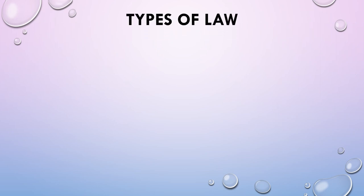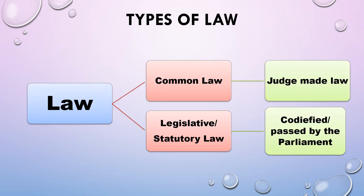Broadly, there are two types of law. The first one is common law and the second is legislative or statutory law. Common law is popularly known as judge-made law, and legislative law is a codified law which is passed by the parliament.